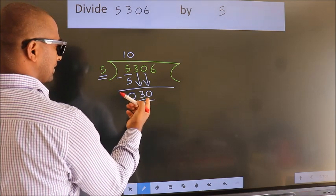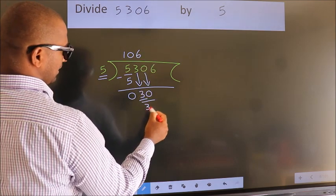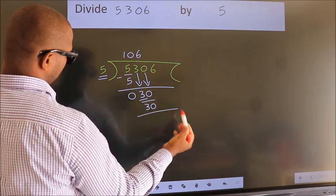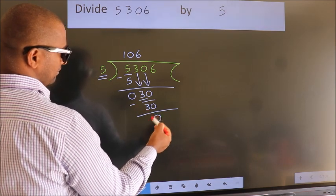When do we get 30? In 5 table, 5, 6, 30. Now we subtract. We get 0.